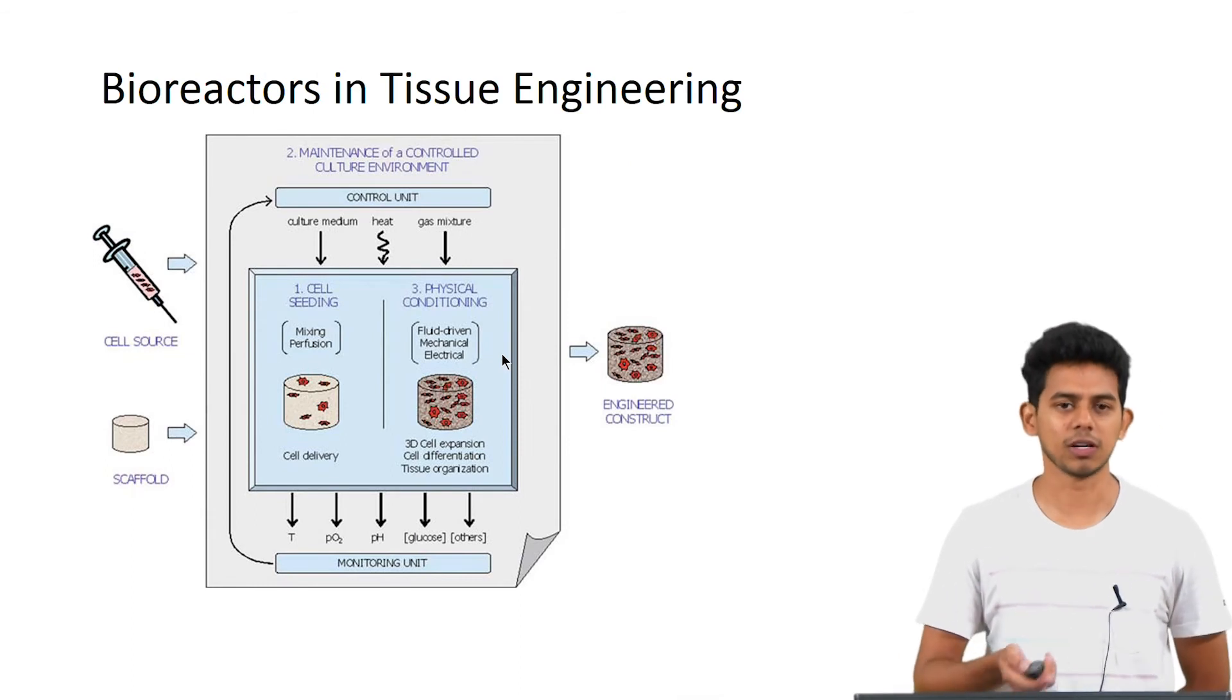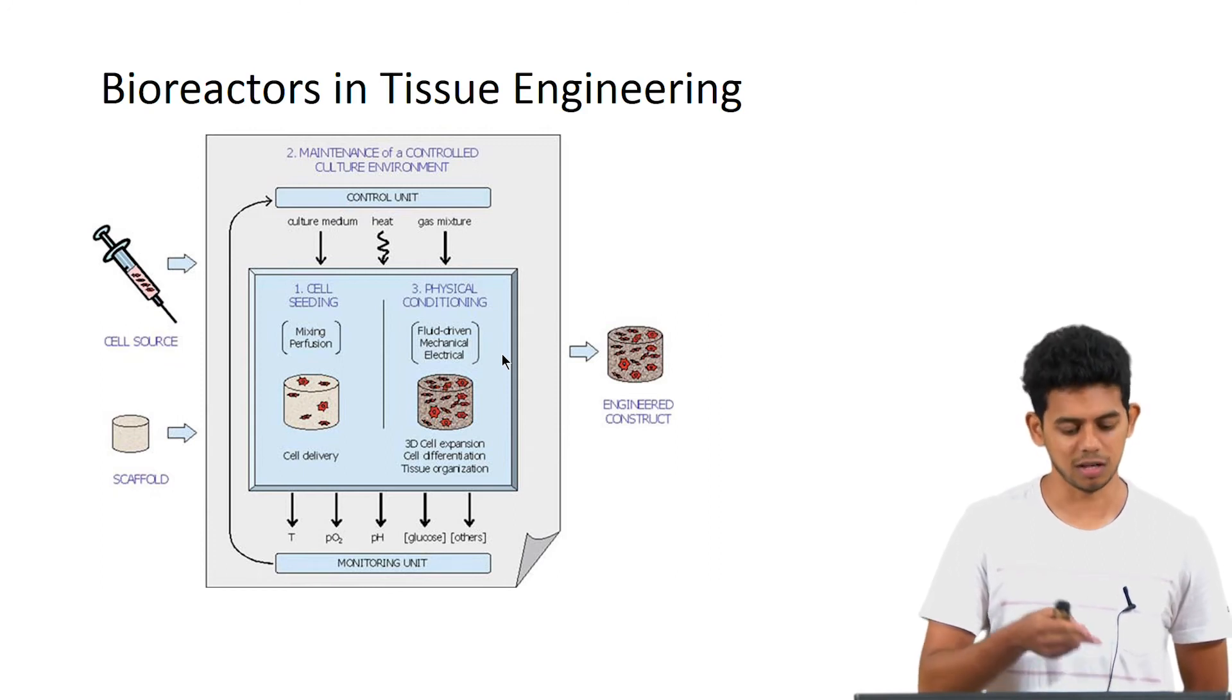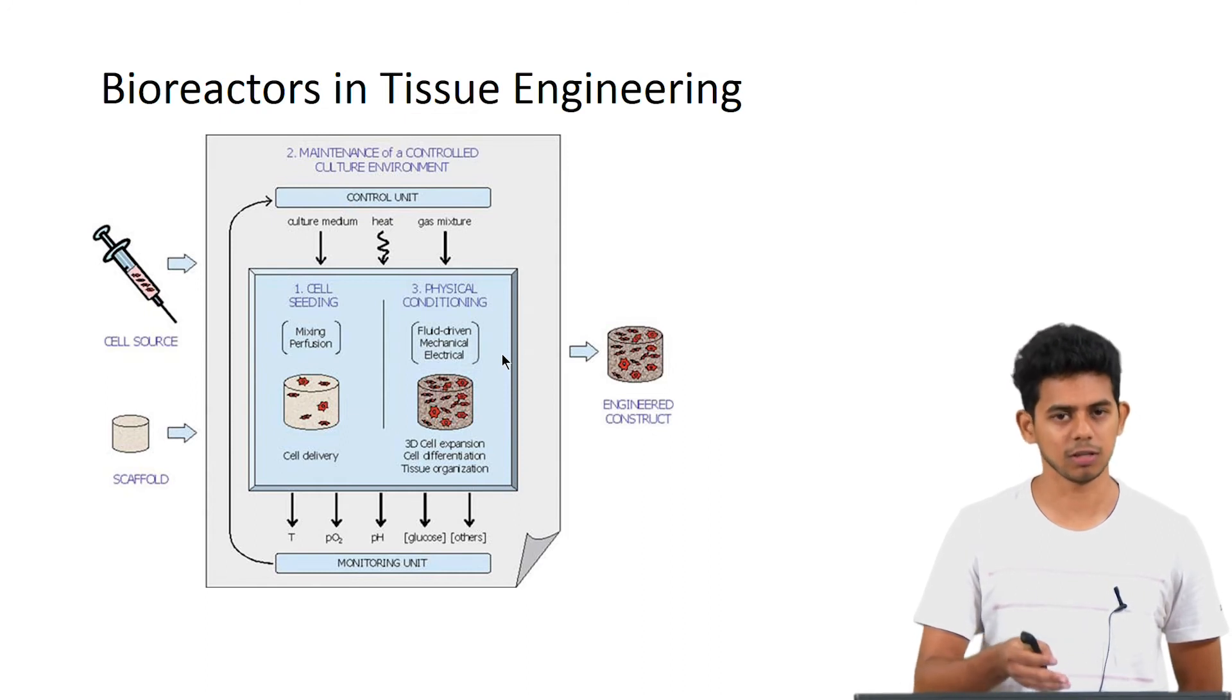Now looking at the main functions of a bioreactor in tissue engineering. We have a cell source and a scaffold. The cells initially need to be seeded onto the scaffold and then we should be capable of maintaining the right environment for the cell proliferation and growth, and there should be some level of physical conditioning which is required.